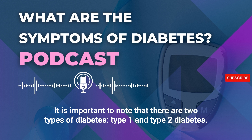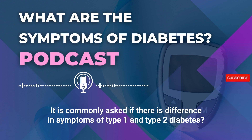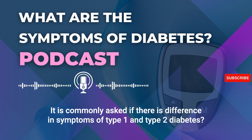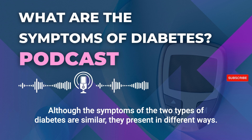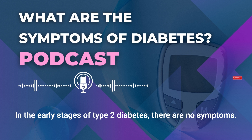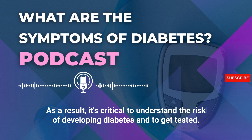It is important to note that there are two types of diabetes: type 1 and type 2. It is commonly asked if there is a difference in symptoms between the two. Although the symptoms are similar, they present in different ways. In the early stages of type 2 diabetes there are no symptoms, so it's critical to understand the risk of developing diabetes and to get tested.